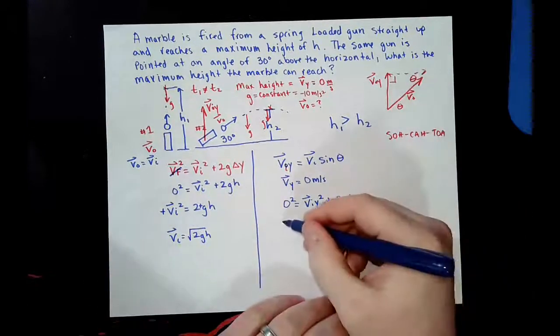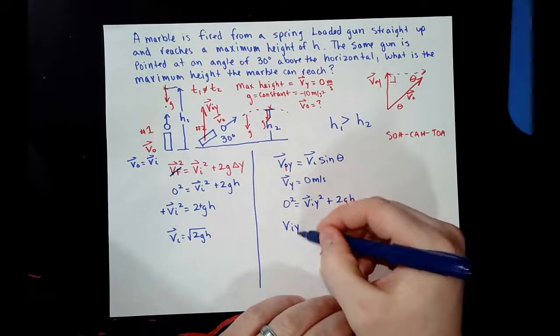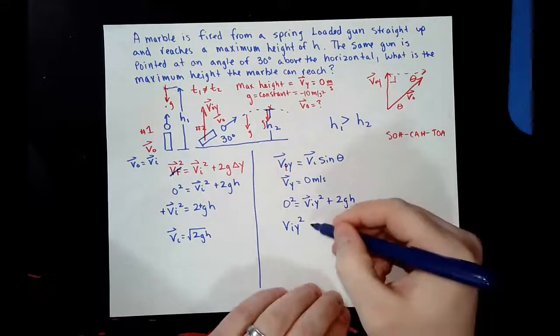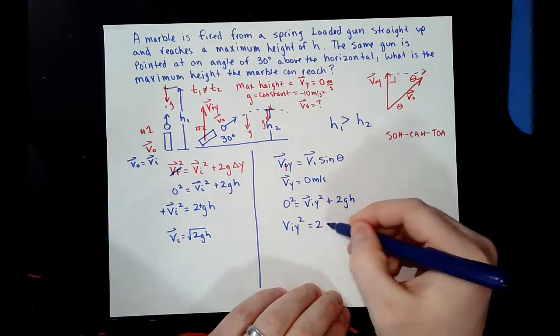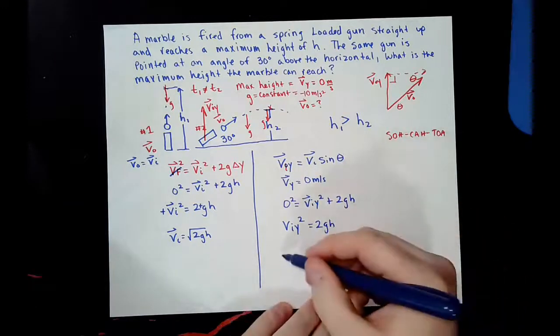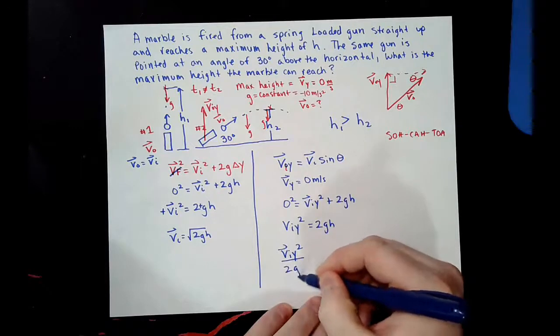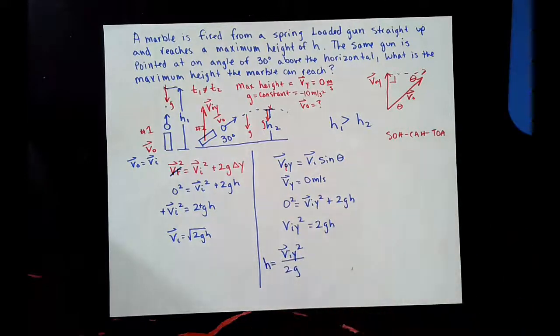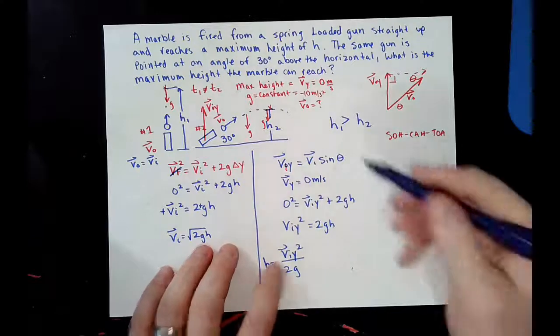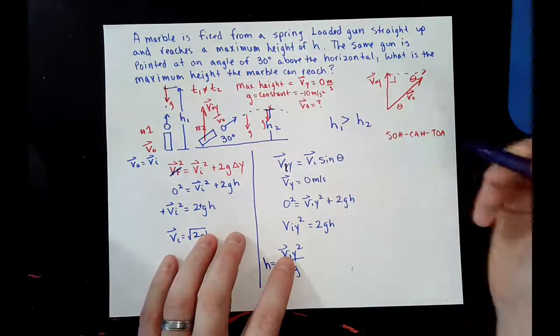So, we get this, v i y squared, equals 2gh. So, solving for h, we get this, v i y squared, all over g, equals. Now, like we said, the velocity initial, put this v i right here, it's just v i sine of theta. So, we know v i is this.